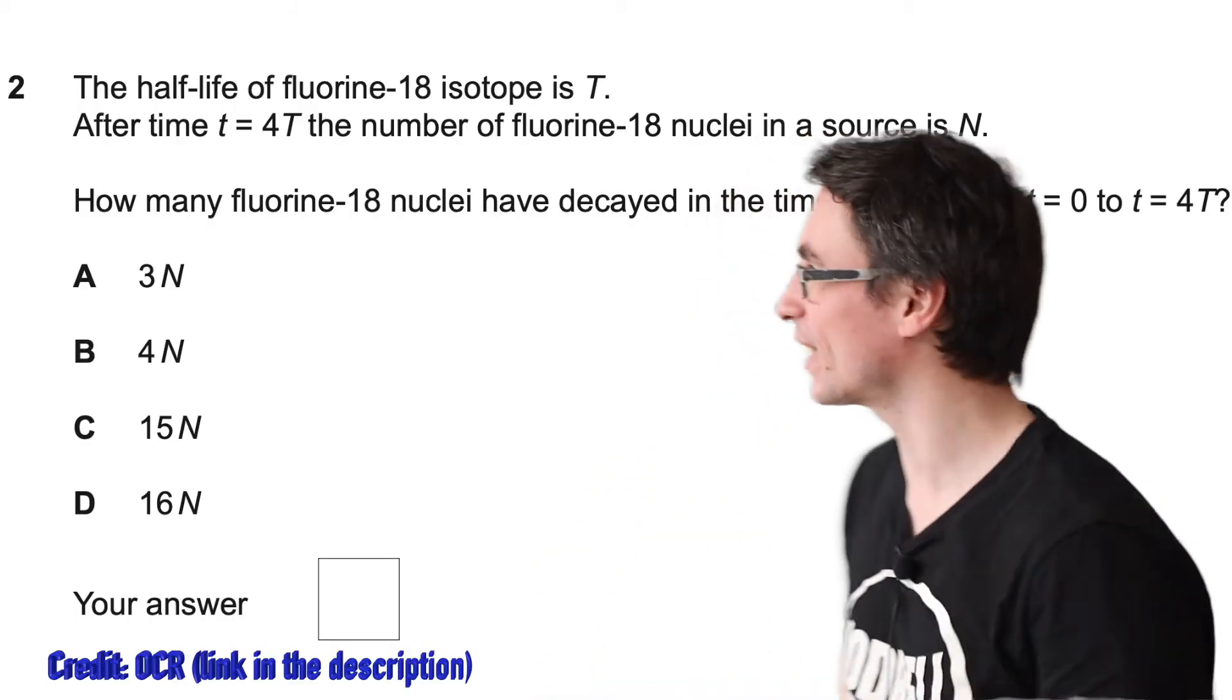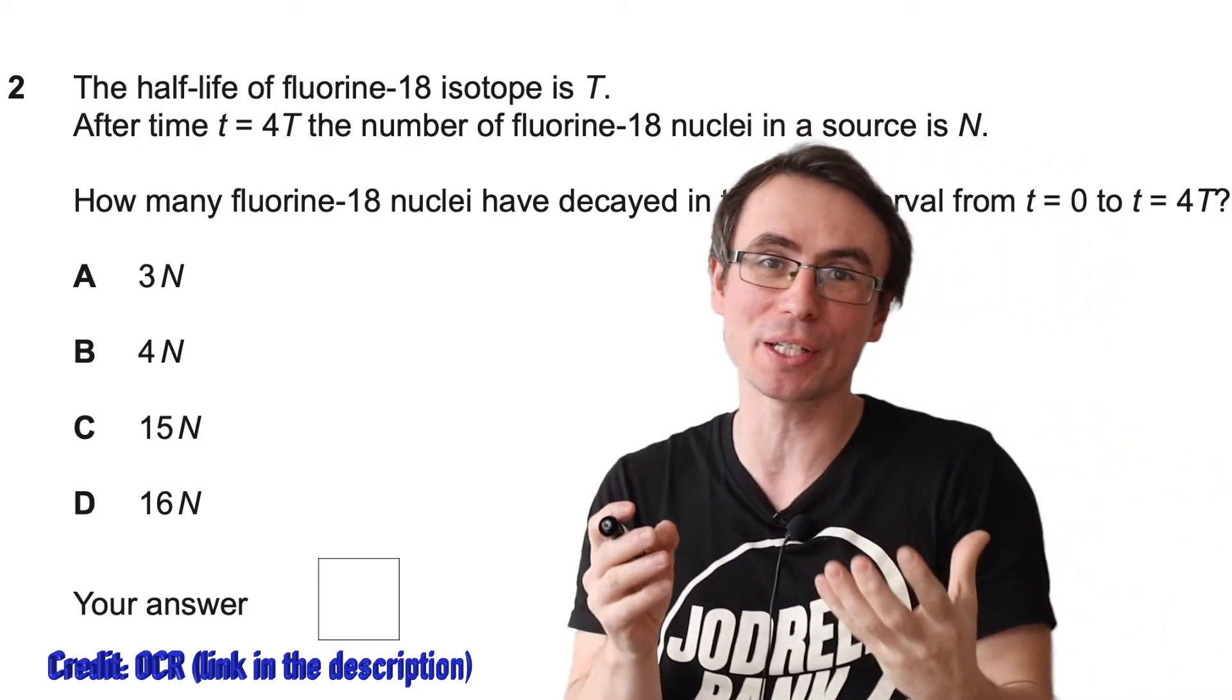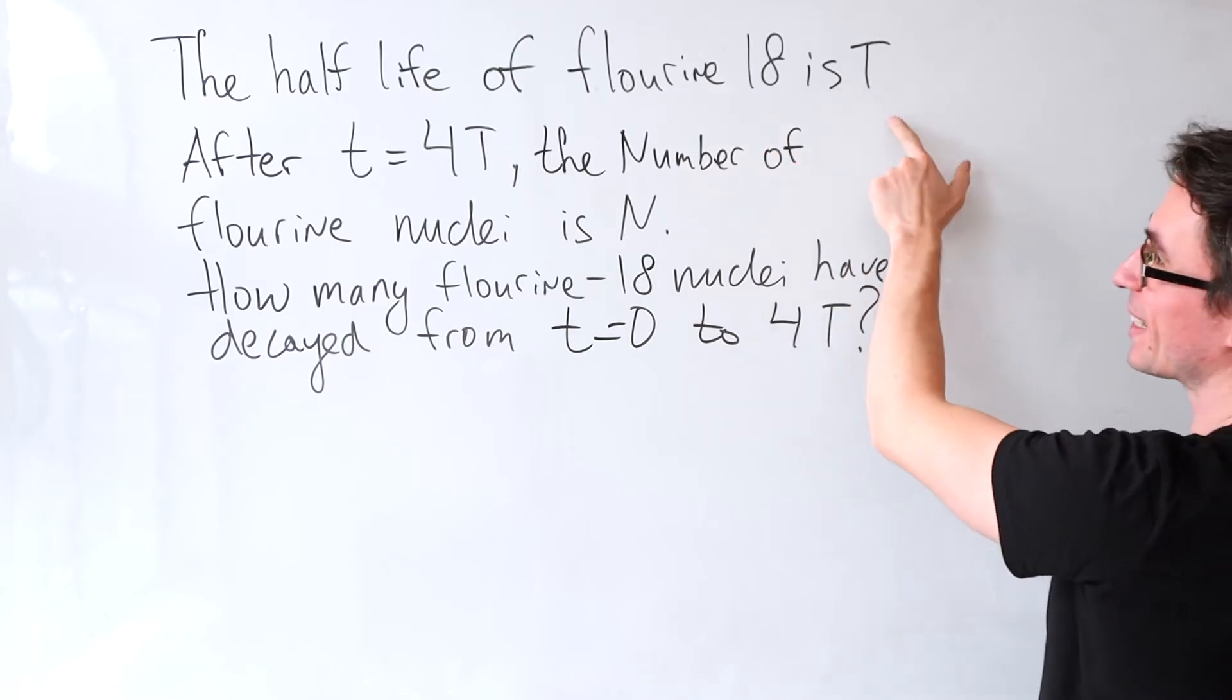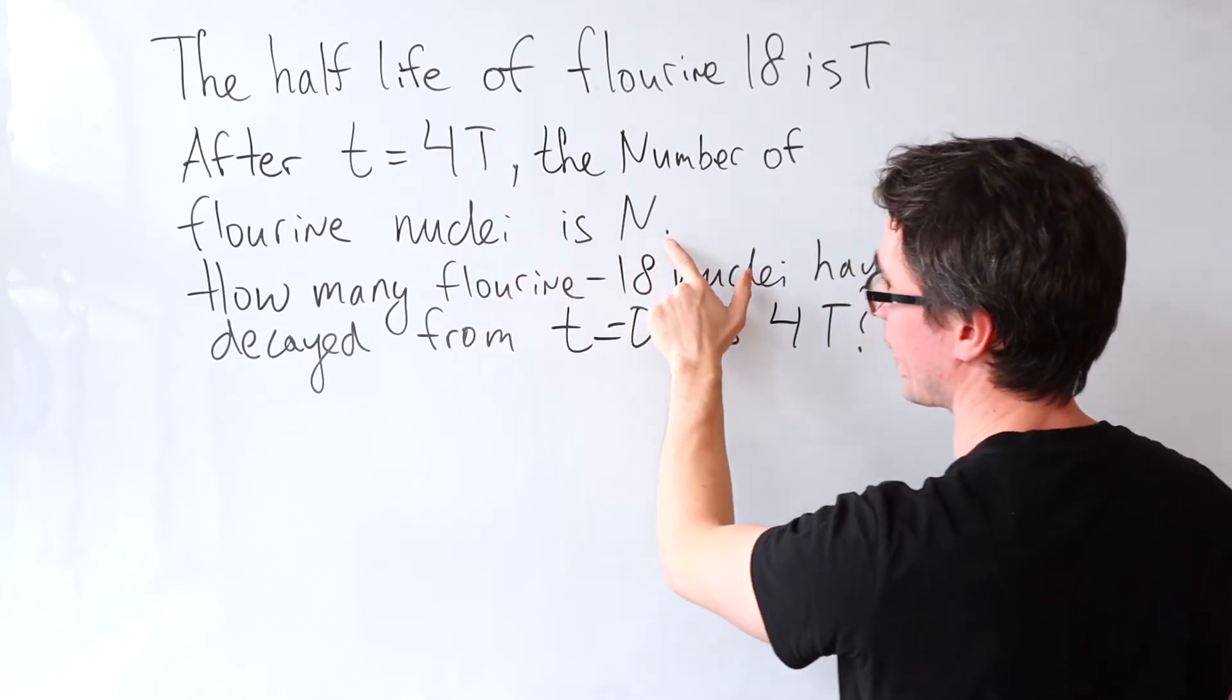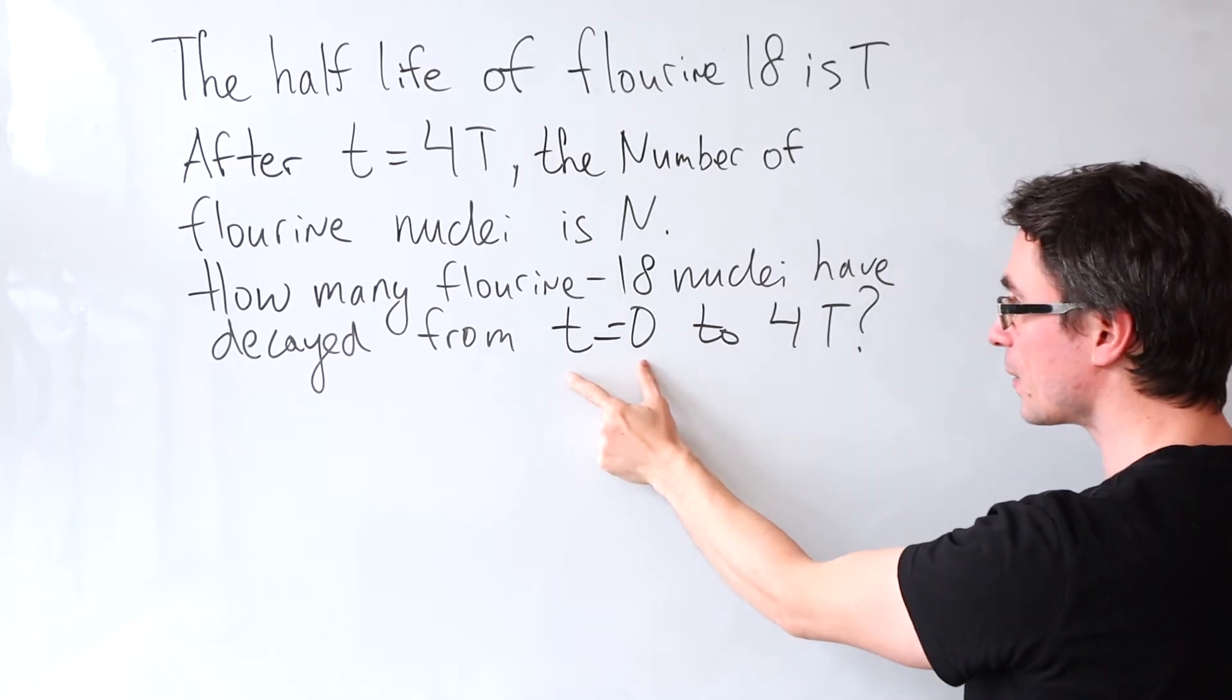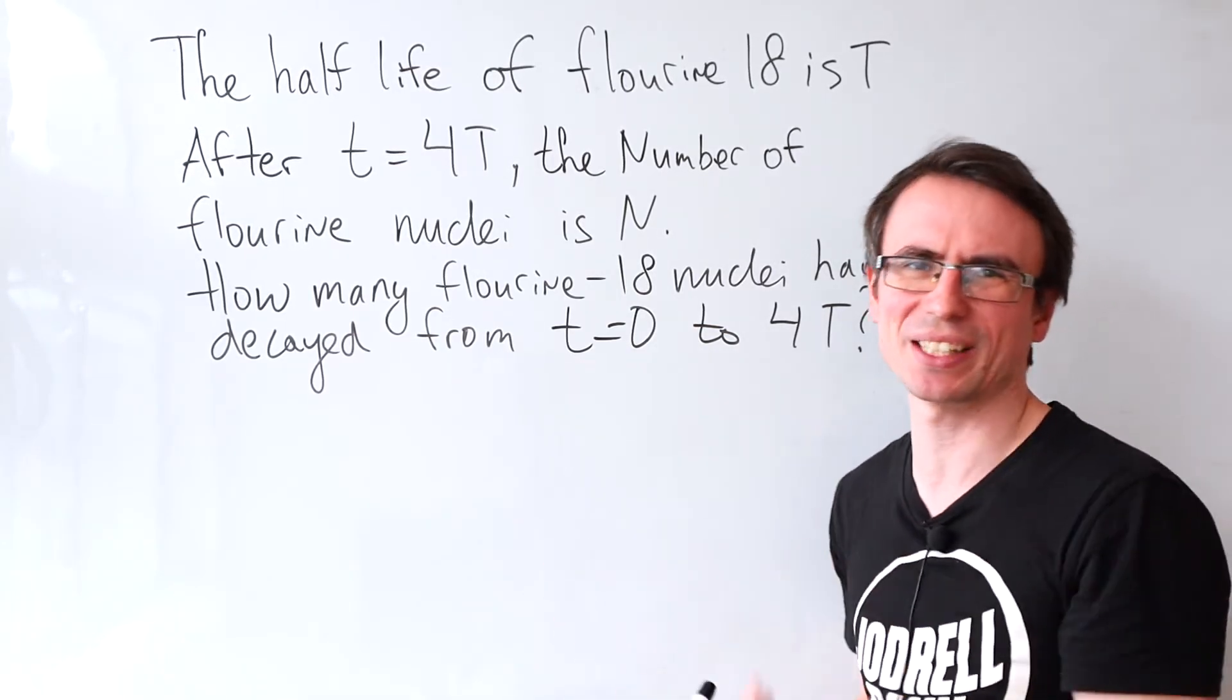Only about a third of the candidates scored this next question. And I believe this is partly due to reading it wrong. So the half-life of fluorine 18 is T. After time, which is equal to four of these, the number of fluorine nuclei is N. How many nuclei have decayed between t is equal to zero and four t? There are a couple of different ways of tackling this question. Let's think about the intuitive one.